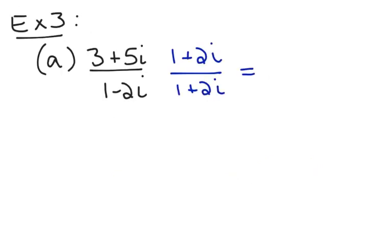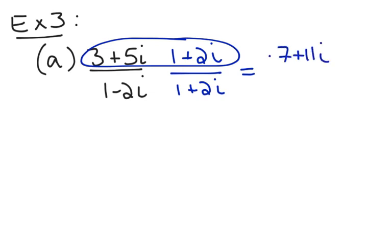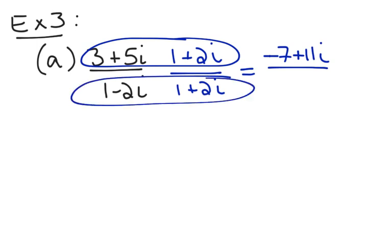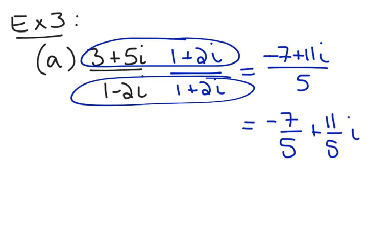That's why we multiply by the conjugate — to eliminate i from the denominator. Use your calculator to multiply the numerators together rather than doing FOIL, and you get negative 7 plus 11i. The denominators multiply to 1 squared plus 2 squared, which is 1 plus 4, which is 5. We traditionally write the answer as negative 7 over 5 plus 11 over 5 i. Some graphing calculators will do this for you automatically; sometimes they won't.